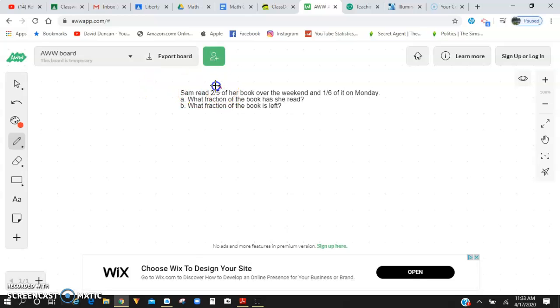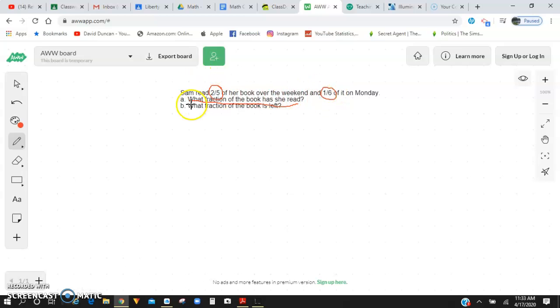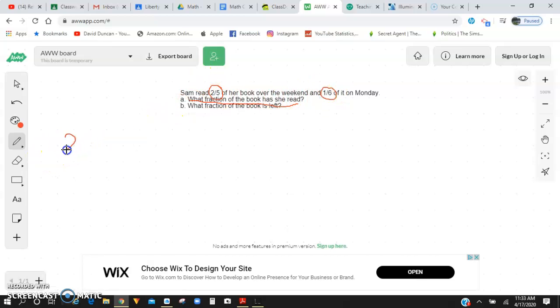So I'm going to go through and I'm going to circle my numbers so they're pointed out at me and I can see what I need to look at and underline what it's wanting me to do. It's wanting me to see how much of the book she has read. So if she read two fifths of it on the weekend and one sixth of it on Monday, I know I need to add those two fractions together. So over here, I'm going to do two fifths plus one sixth equals.